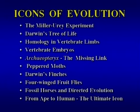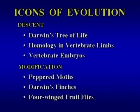I'm not going to talk about all of these today — I'm going to talk about six. I chose these partly because they illustrate the two aspects of Darwin's theory: descent and modification. The first three — Darwin's tree of life, homology in vertebrate limbs, and vertebrate embryos — address descent. For modification, I'll cover peppered moths, Darwin's finches, and four-winged fruit flies.